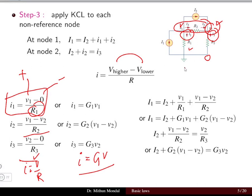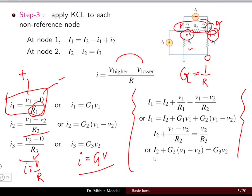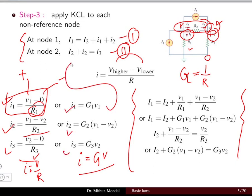We can also write the current as conductance times voltage, where conductance G equals 1/R (the inverse of resistance). Equations can be written in terms of conductance instead of resistance. At nodes 1 and 2 we obtain the fundamental KCL equations, and substituting i1, i2, i3 in terms of resistance or conductance gives us two main equations.